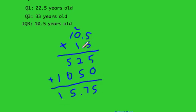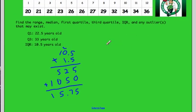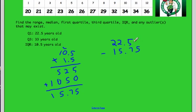As a check: 11 times 2 would be 22, which is too high since we raised both factors. Once we have 15.75, we use it with Q1 and Q3. For Q1, we subtract: 22.5 minus 15.75. It's important to have a strong foundation with decimals — annex a zero so the decimals line up properly, then subtract.